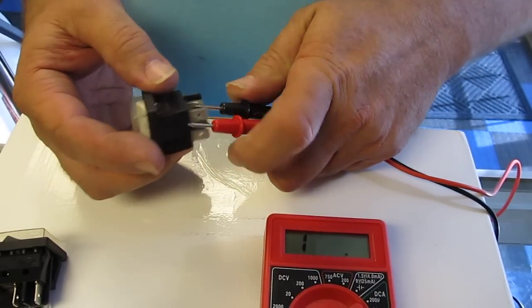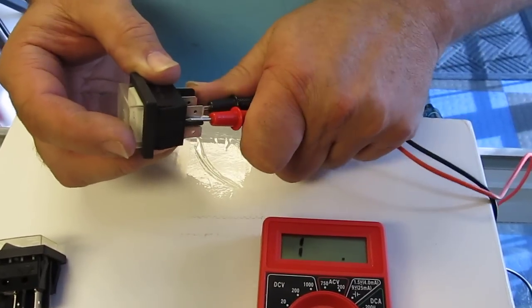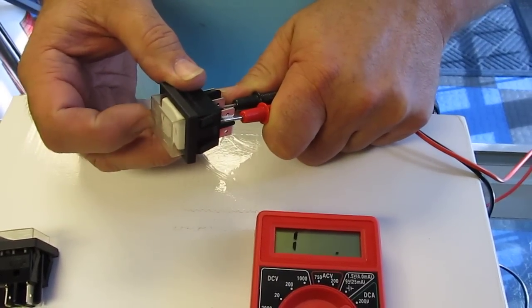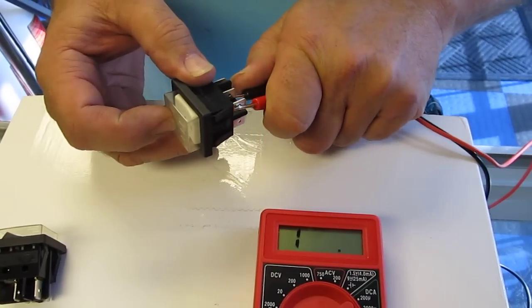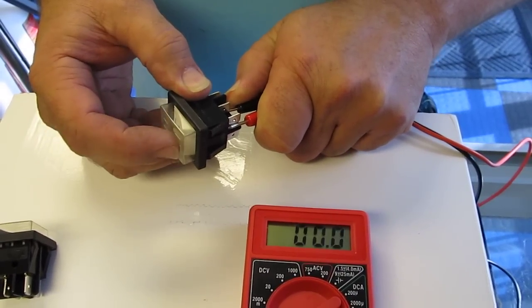We're going to test these two. So to turn these two on and get a zero on the meter, we should have to turn the switch away from those two, this way. There it is, on.